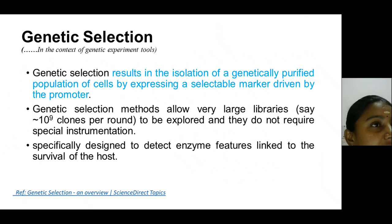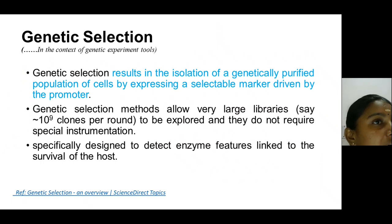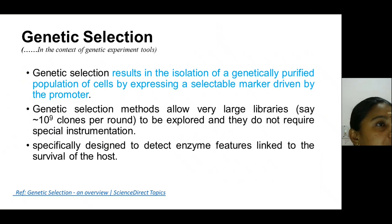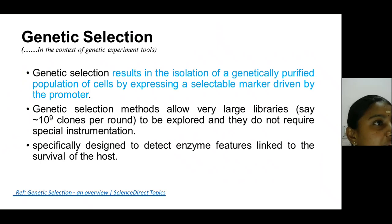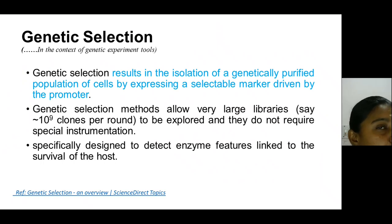The positive selectable marker confers a selective advantage for the host selection. If your objective is to select the antibiotic-resistance phenotype, then incorporate the addition of the antibiotic. Only the antibiotic-resistant cells can grow in the selection plate — this is called on-selection, or positive selection. Genetic selection is specifically designed to detect enzyme features linked to the survival of the host. There are also negative selectable markers, and some selectable marker genes can function as both positive and negative selectable markers.